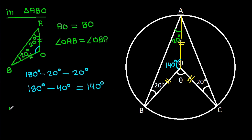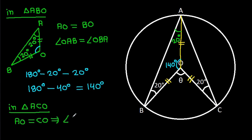Also, in triangle ACO, we have AO equal to CO. That means angle OAC will be equal to angle OCA. So this angle will be 20 degrees, and again angle AOC will be 140 degrees.